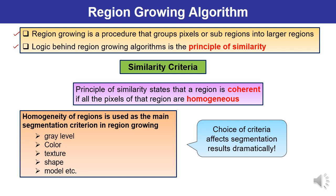Homogeneity of a region is used as the main segmentation criteria in region growing. The important factors considered in this algorithm include color, intensity, texture, shape, statistical properties, and other models. These define the homogeneity of the region on which the algorithm is applied. You must remember that the choice of criteria affects the segmentation results dramatically, so it must be considered very carefully.